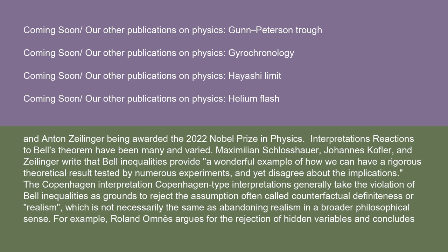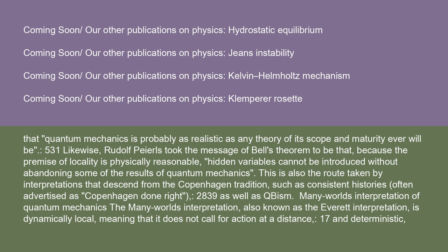Interpretations: Reactions to Bell's theorem have been many and varied. Maximilian Schlosshauer, Johannes Kofler, and Zeilinger write that Bell inequalities provide a wonderful example of how we can have a rigorous theoretical result tested by numerous experiments, and yet disagree about the implications. Copenhagen-type interpretations generally take the violation of Bell inequalities as grounds to reject the assumption often called counterfactual definiteness or realism — which is not necessarily the same as abandoning realism in a broader philosophical sense. For example, Roland Omnès argues for the rejection of hidden variables and concludes that quantum mechanics is probably as realistic as any theory of its scope and maturity ever will be.